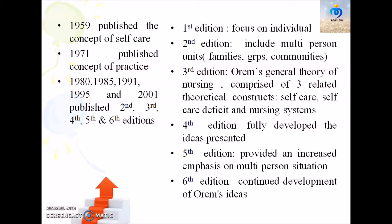In the first edition, she focused on the individual. In the second edition, she included multi-person situations, and in the third edition, families, groups, and communities. Also in the third edition, Orem's General Theory of Nursing — comprising three theoretical constructs: self-care, self-care deficit, and nursing systems — was introduced. By the fourth edition, the theory was fully developed. The fifth edition provided increased emphasis on multi-person situations, and the sixth edition continued development of Orem's ideas.